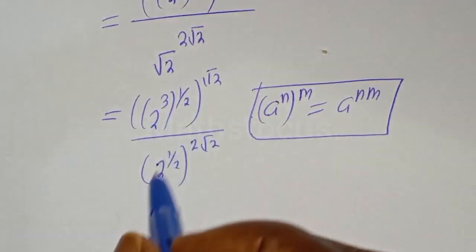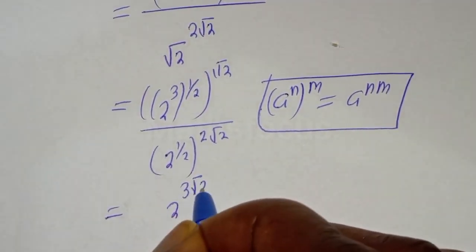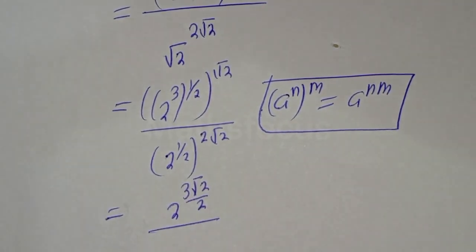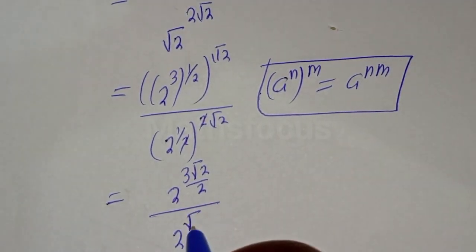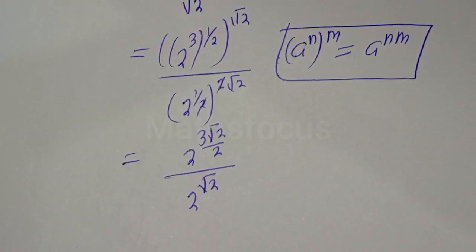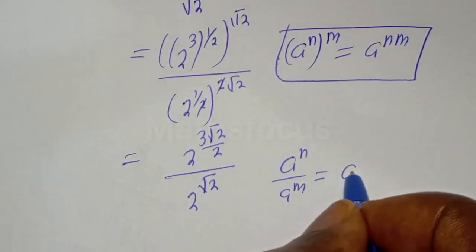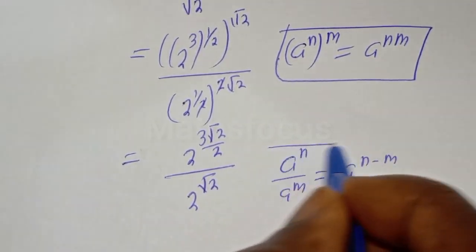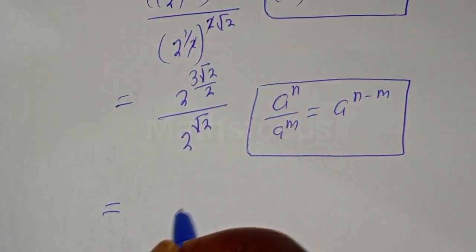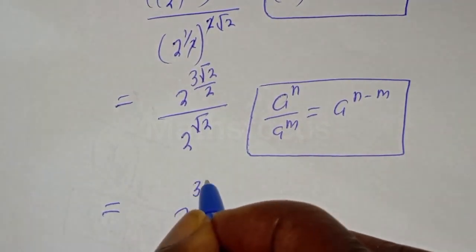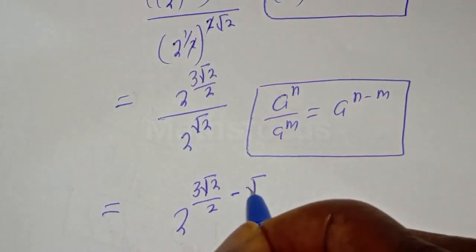Then this can be written as 2 raised to power 3 root 2 over 2, divided by 2 raised to power 3 root 2 over 2. The like terms cancel, using the rule a raised to power n divided by a raised to power m equals a raised to power n minus m, giving 2 raised to power 3 root 2 over 2 minus root 2.